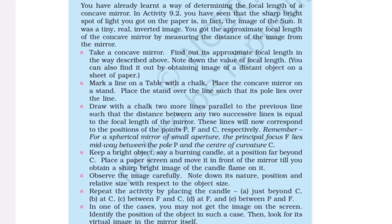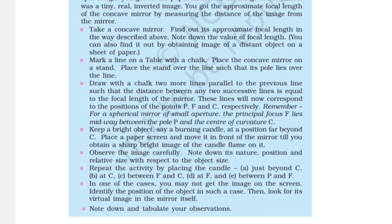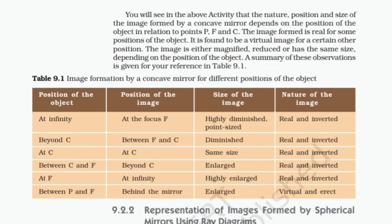Keep a bright object, say a burning candle, at a position far beyond C. Place a paper screen and move it in front of the mirror till you obtain a sharp bright image of the candle flame. Note down its nature, position, and relative size with respect to the object. Repeat the activity by placing the candle: just beyond C, at C, between F and C, at F, and between P and F. In one of the cases you may not get the image on the screen — identify this position and look for its virtual image in the mirror itself. The nature, position, and size of the image formed by a concave mirror depends on the position of the object in relation to points P, F, and C. The image is real for some positions and virtual for certain other positions. A summary is given in Table 9.1.